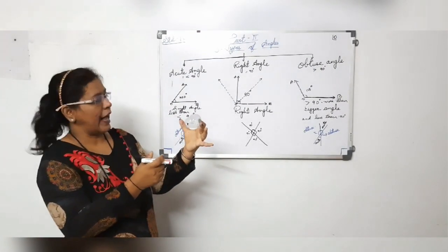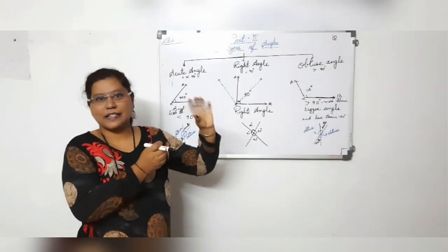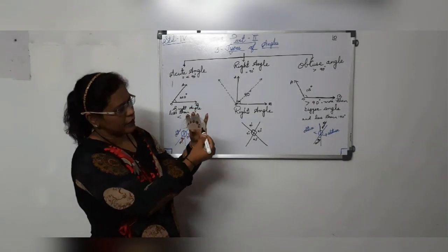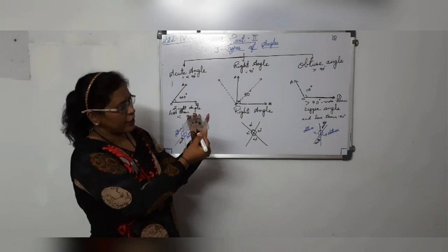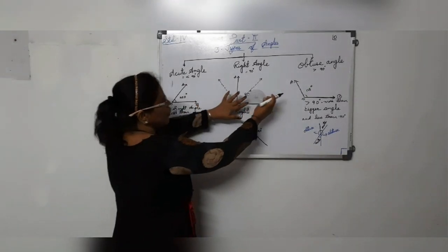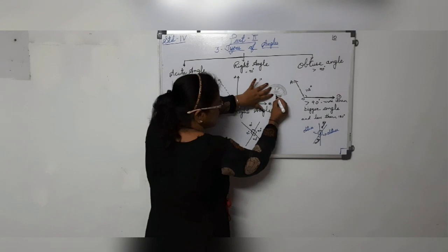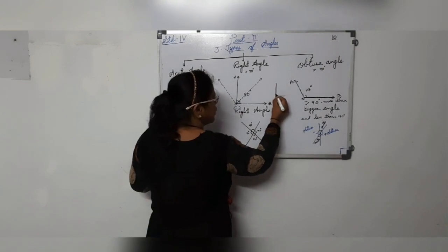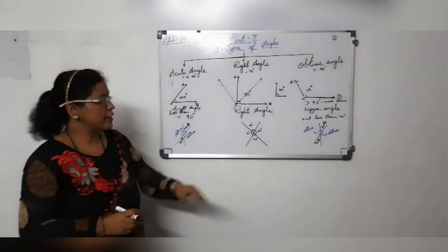To measure or draw an angle we use this instrument. Everybody calls it a D-scale, but my dear students, this D-scale is called a protractor. On this protractor there are two scales — one inside and one outside — and it starts from 0 to 180 on both sides. If the angle is 180 degrees, it is a straight angle. To measure 90 degrees, put this protractor on a piece of paper, draw from the center, put a point, and mark at 0 and 90. Then draw the ray of the line — it is 90 degrees.